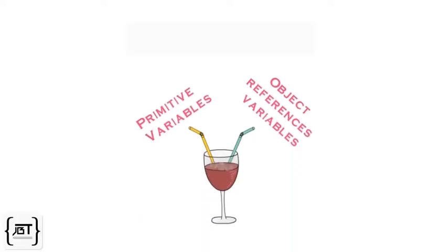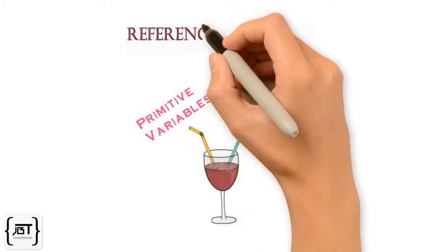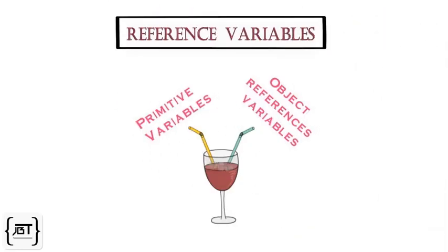In the last video, we saw that primitive variables hold fundamental values that have a predefined type. Now, we will look at the other type of variables, the reference variables.